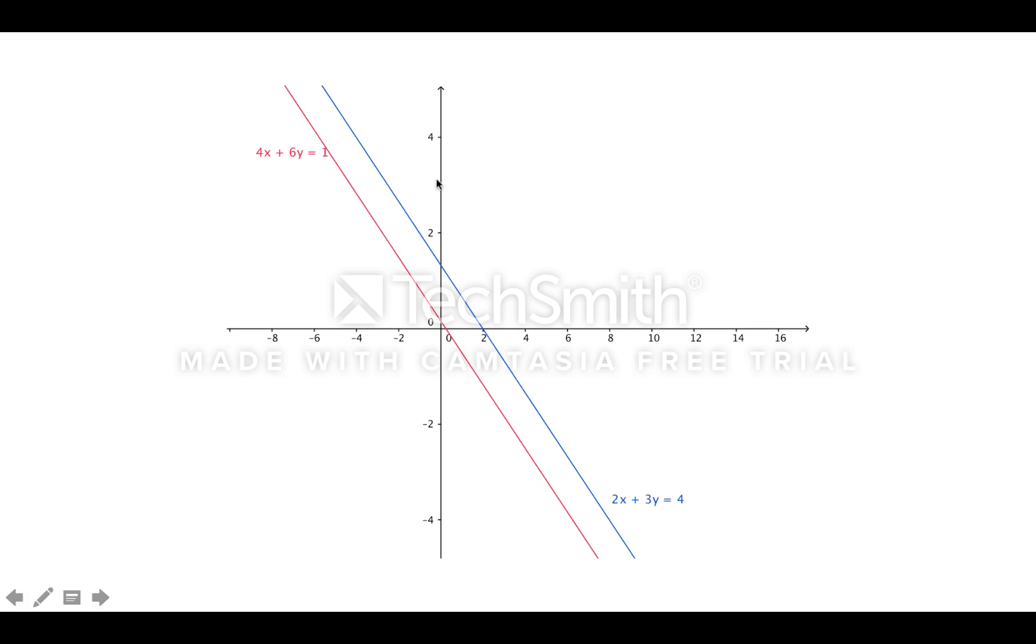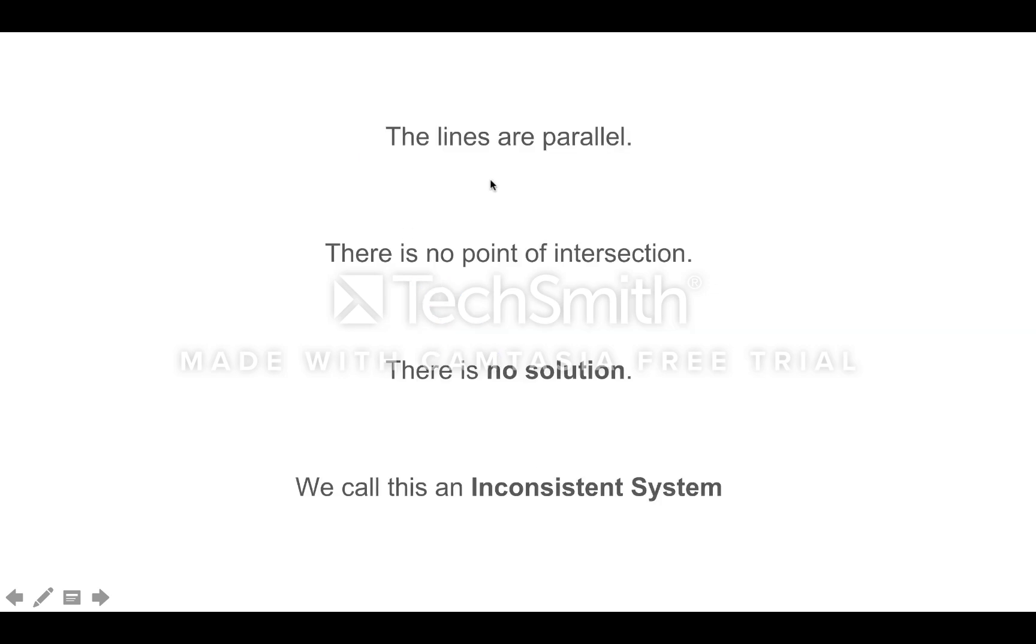Look, we graph these two lines. We get here's the line 2x plus 3y equals 4, and here's the line 4x plus 6y equals 1. Those lines are parallel. They don't intersect. There's no point of intersection. The lines are parallel.